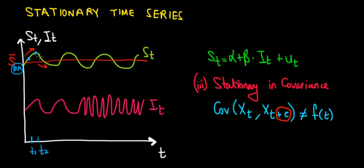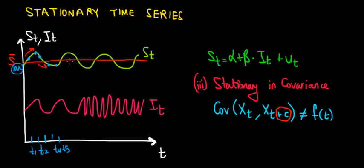If we go to T3, we're still having a positive covariance because in the next period the value is still above the average. And if we go below $10,000 at T4, we're still below $10,000 at T5 — still a positive covariance. So the way this variable varies across time is in a positive matter. We can predict what's going to happen in the next period based on the previous period because it moves in the same direction.